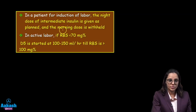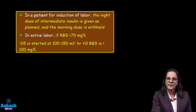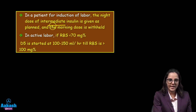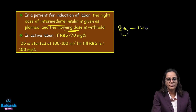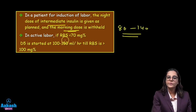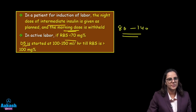If the patient is on insulin and you are going to induce her, the night dose of intermediate insulin is given as planned but the morning dose is withheld. If the patient is in active labour, maintain blood sugar between 80 to 140. If it goes less than 70, start dextrose.